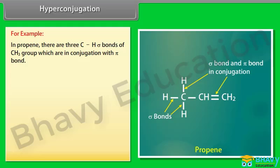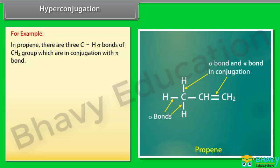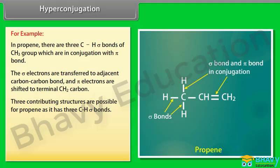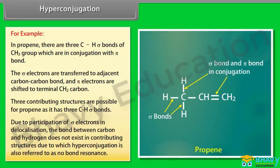In propene, there are three C–H sigma bonds of the CH3 group which are in conjugation with the pi bond. The sigma electrons are transferred to the adjacent carbon-carbon bond and the pi electrons are shifted to the terminal CH2 carbon. Three contributing structures are possible for propene as it has three C–H sigma bonds. Because the C–H bond does not exist in the contributing structures, hyperconjugation is also referred to as no-bond resonance.